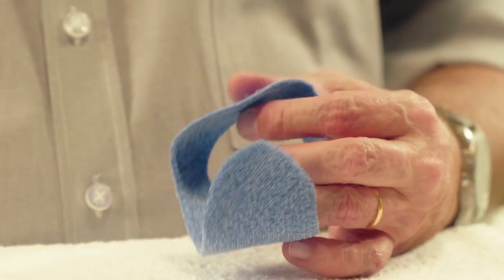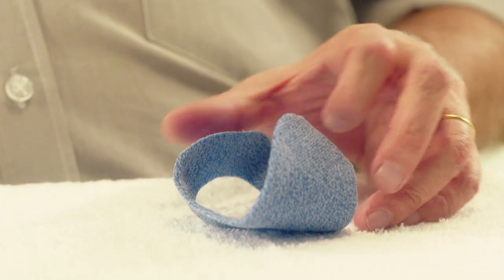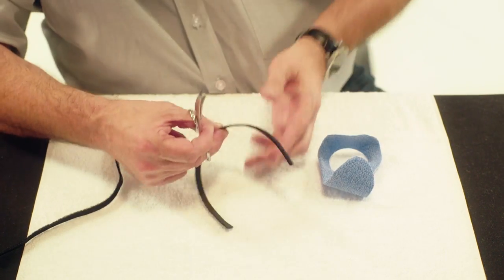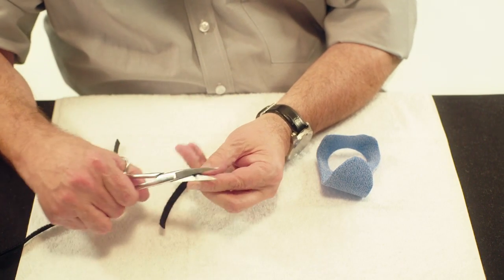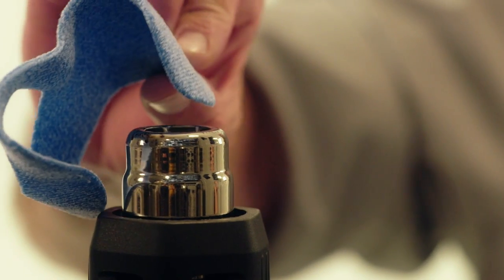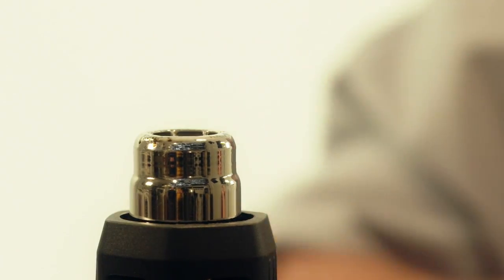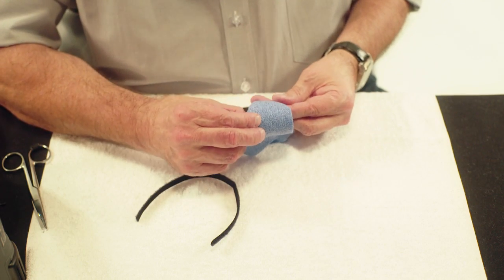For the strapping, use two small strips of Velcro loop. Heat the inside of the orthosis on the opposite side of the thumb briefly with a heat gun.